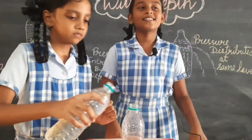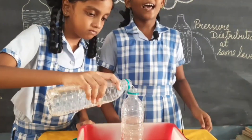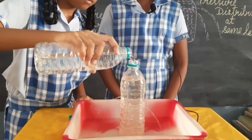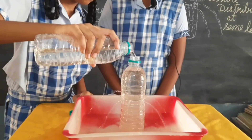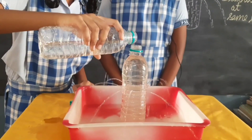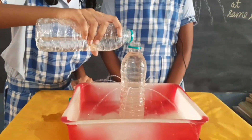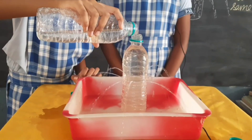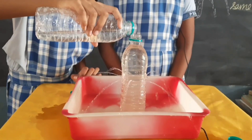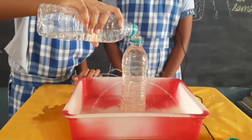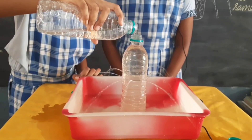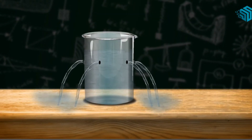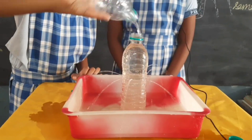Observe the distance from the container that the water jet from all the holes comes out with the same pressure and falls at the same distance from the container. We conclude that the pressure of a liquid or water at a given depth is the same in all directions.